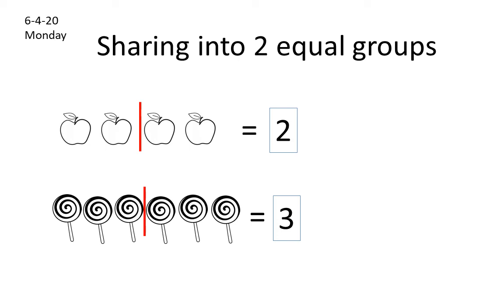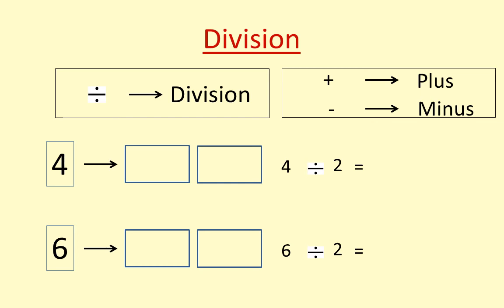Write down in the notebook. And in the next page, write the heading 'Division.' Write the division sign. And write four. We have to divide into two equal groups. Draw one dot here in this box, and another one. One here, two here, three here, and four here. How many we will get in each box? Two. So write here: two.